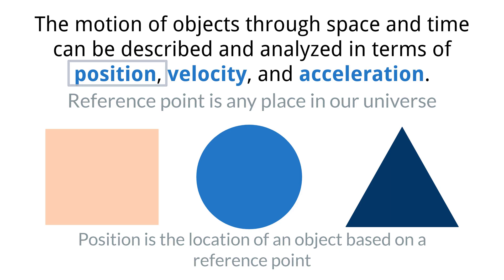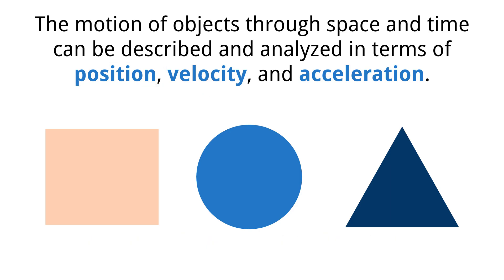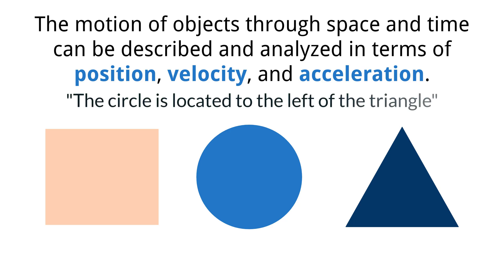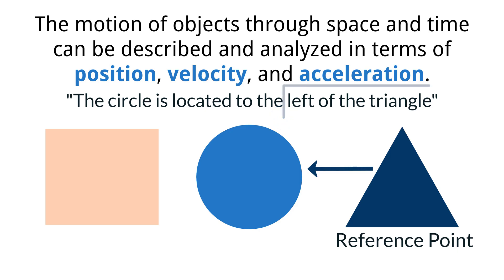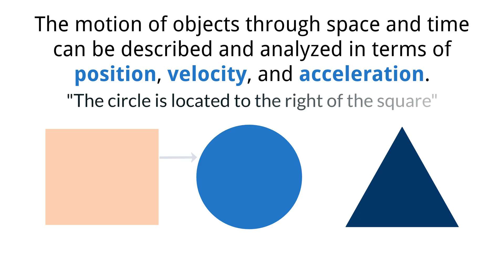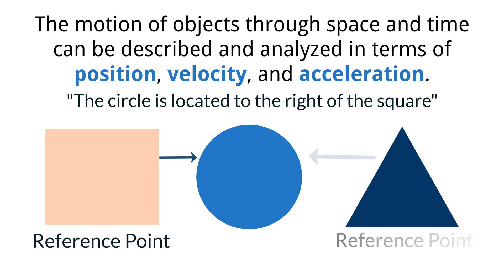For example, if you try to describe the position of the circle in this arrangement of shapes, you would have to say something like: the circle is located to the left of the triangle. In this statement, you have used the triangle as your reference point and the directional term 'left' to indicate the position of the circle as it relates to the position of the triangle. However, someone else might say the circle is located to the right of the square. This again indicates the same position of the circle, but now it is in reference to the position of the square. Both of these statements indicate the position of the circle, but use different reference frames.